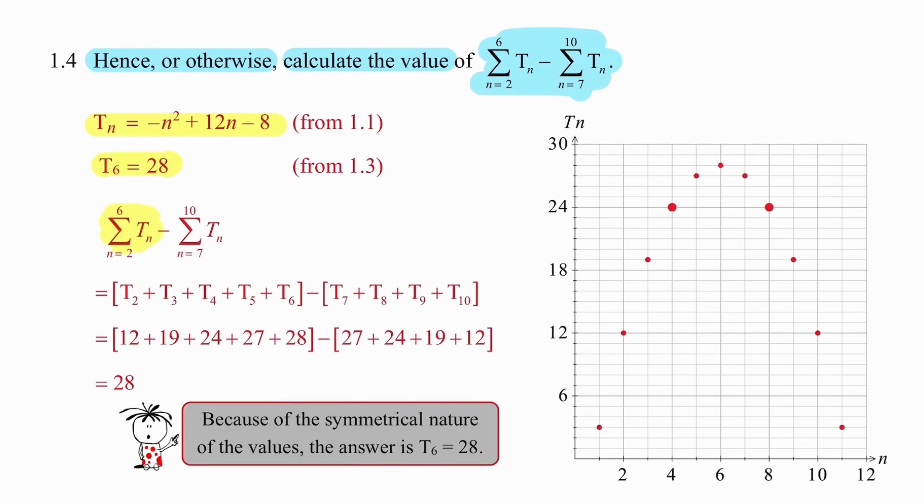If I take the statement on the left and expand that I can see that I need to add all terms starting with the second term up to and including the sixth term. If I take the statement on the right I need to add all terms from the seventh term up to and including the tenth term. We have a formula, we already know that the sixth term is 28 and we already know that the fourth term and the eighth terms are 24. We've worked those out.